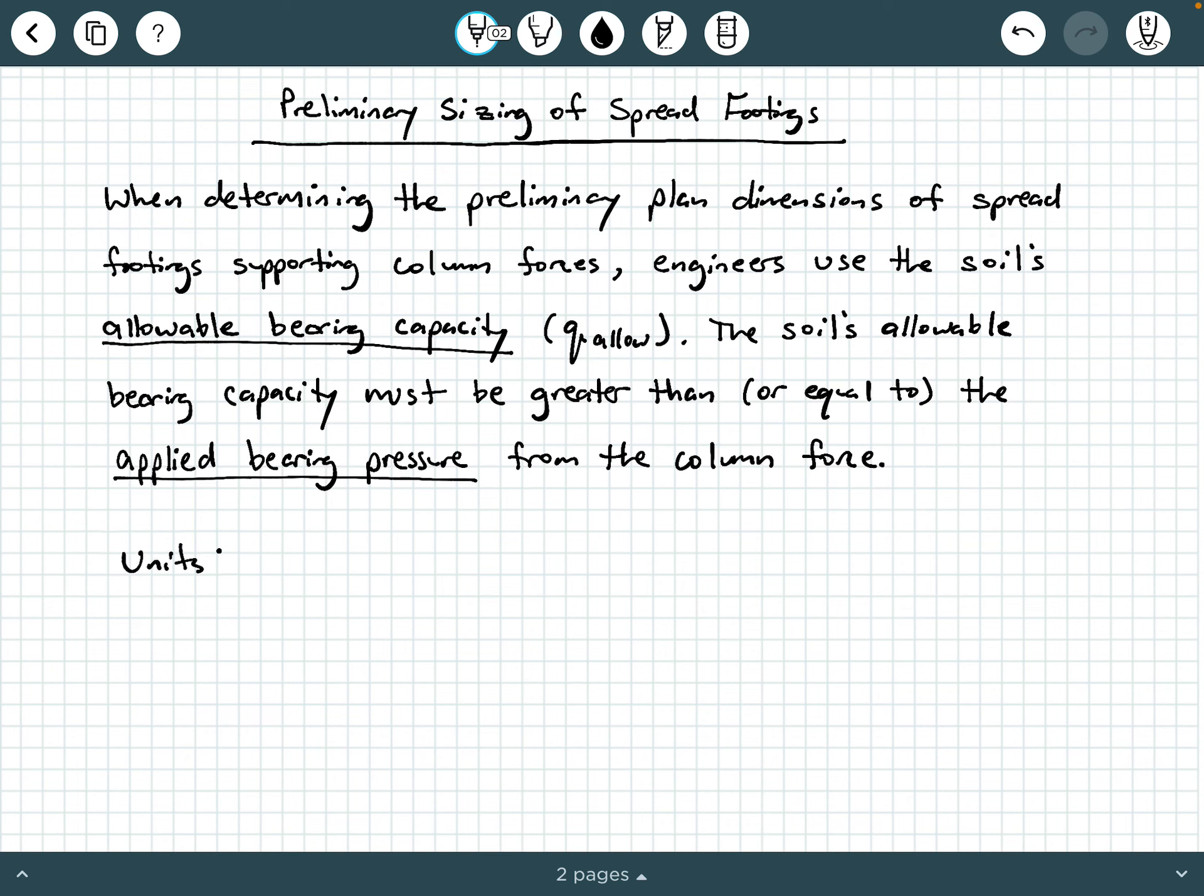So units are very important here. The units for allowable bearing capacity, which we're going to call Q-allow, has units of stress. And if you remember from some of your classes, this triple equal sign is the mathematical symbol for the phrase has units of. So this little symbol means has units of stress.